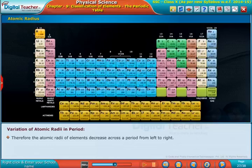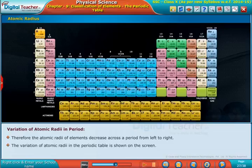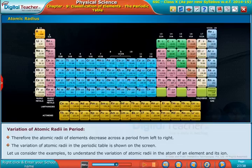The variation of atomic radii in the periodic table is shown on the screen. Let us consider the examples to understand the variation of atomic radii in the atom of an element and its ion.